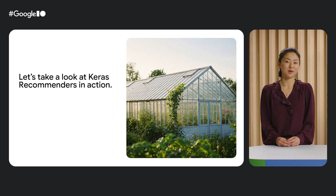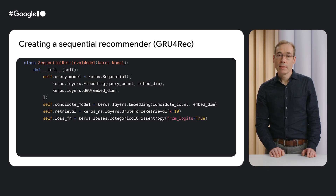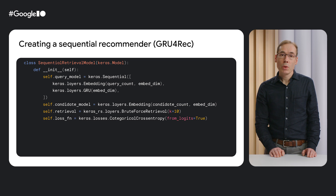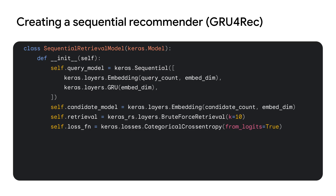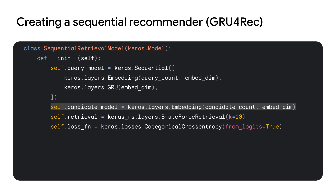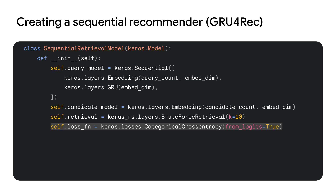Now let's take a look at Keras Recommenders in action. We'll walk you through a practical example of building a sequential recommender model known as GRU4REC. Unlike traditional methods like matrix factorization, sequential recommenders leverage a user's past interactions to make better predictions. Imagine recommending TV episodes — knowing which episodes a user has already watched allows the model to intelligently suggest the next logical episode. Here is how we might structure the code in a model subclass. This model is going to use a two-tower architecture. We have a query tower representing the user, and we'll use a gated recurrent unit, or GRU, within this query tower to process the user's sequence of past items. The second tower is the candidate tower for the items — in this example, we'll use a simple embedding layer. We'll also need a retrieval layer to perform the actual recommendations, and a loss function to measure the quality of our predictions.